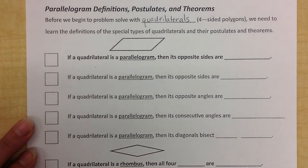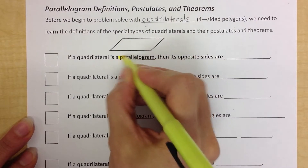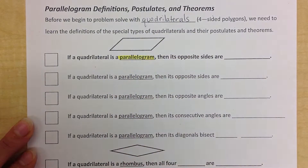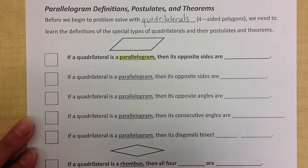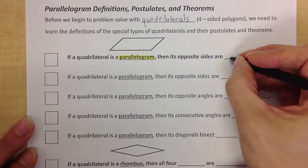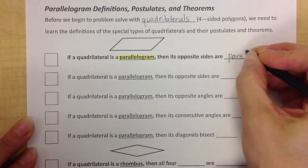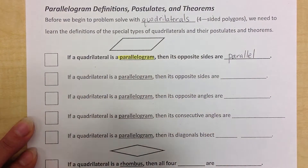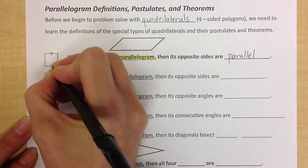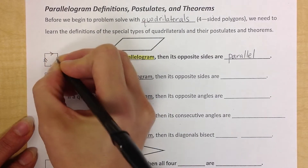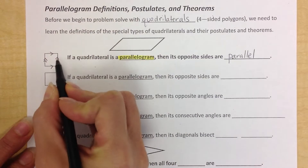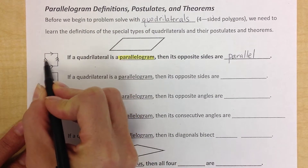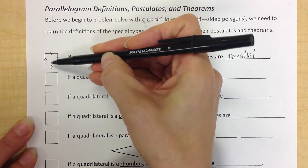I'm going to start with just the parallelogram. This is traditionally what people picture for a parallelogram. If you know that a quadrilateral is a parallelogram, the definition is that opposite sides are parallel. That's pretty easy since it's right there in the name. So, what would that look like if that information was given to you in a picture? Remember these arrows — opposite sides are the ones across from each other, so these two will be parallel and these two sides will be parallel.